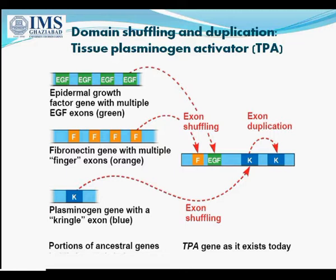The second TPA exon specifies a growth factor domain which has apparently been obtained from the gene for epidermal growth factor, and which may enable TPA to stimulate cell proliferation. The last two exons code for kringle structures, which TPA uses to bind to fibrin clots. These kringle exons come from the plasminogen gene.